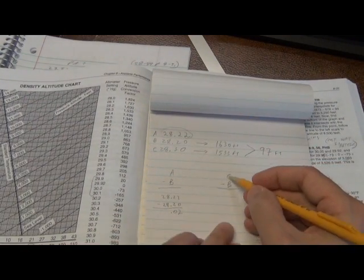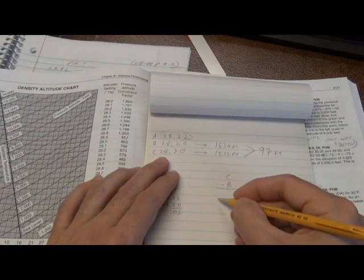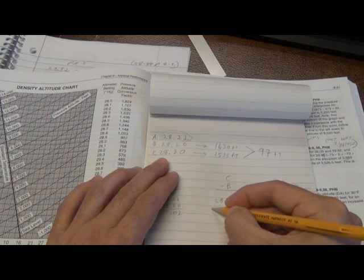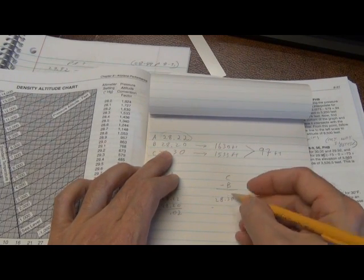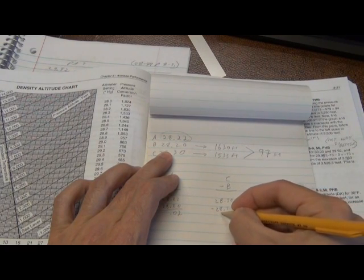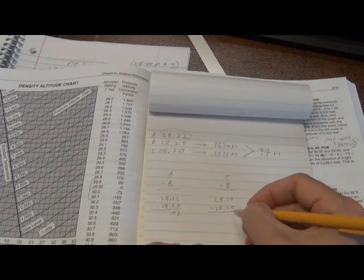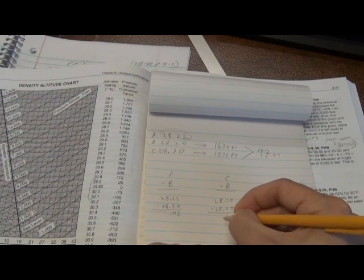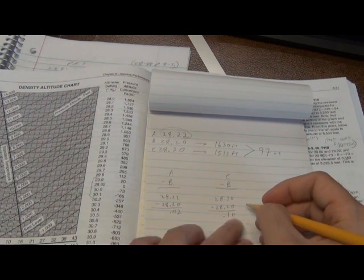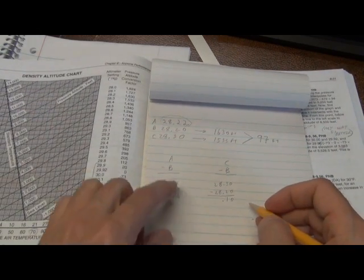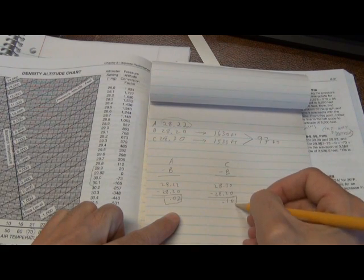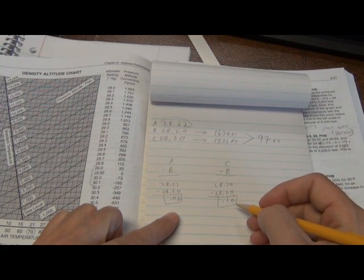The next thing you want to do is C minus B. So you write down C, which is 28.30 minus B, which is 28.20. And again, do it on your calculators, but I know that the answer is 0.10. Why these are important is not important right now. That you do this every time and come up with this number and this number is important because you're going to need those soon.